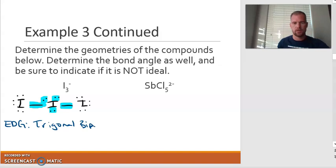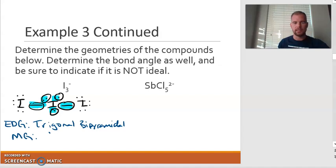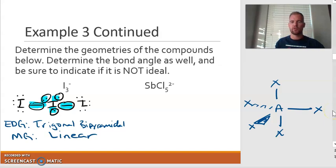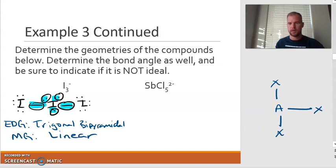Now for the molecular geometry, I have to ask myself — there are three lone pairs and there are two bonds. So if I take a look at a chart, that's going to give me a linear molecular geometry. Let me draw out to the side here why that is. Here's our central atom A. Trigonal bipyramidal has that linear shape up and down, and then you've got that trigonal planar shape in the equatorial position. So those three lone pairs are going to take the equatorial spots — this spot here, this spot here, and this spot here.